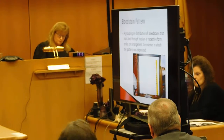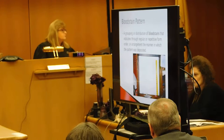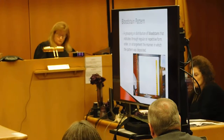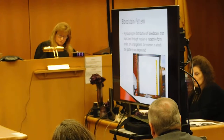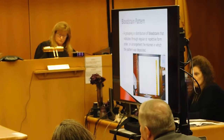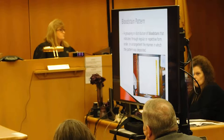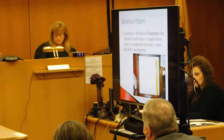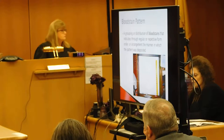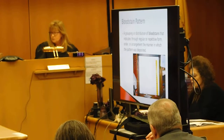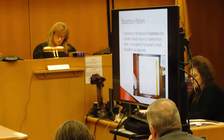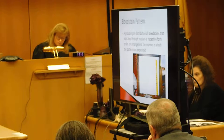This is a definition of a blood stain pattern. It's a distribution of blood stains that indicate, through regular or repetitive form, the arrangement in which the blood strikes a target. A target can be anything — walls, ceilings, floors. You always put more emphasis on something that is fixed versus movable. Something on a tabletop is a movable target, whereas a wall or floor is fixed.